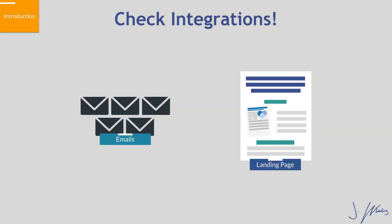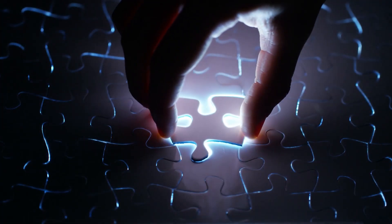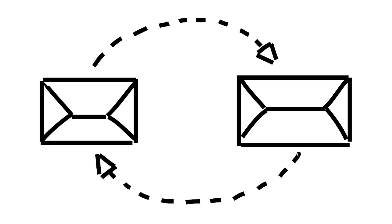Number two: make sure that if you already have an email autoresponder, the landing page software you're looking at actually integrates with it natively. Go to the landing page software site, scroll down, find the knowledge base, and search your email provider to see how it actually integrates. It's ridiculous how many say they integrate but require Zapier or Automate.io. Make sure it has a true native integration.